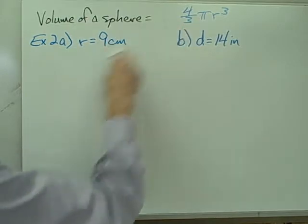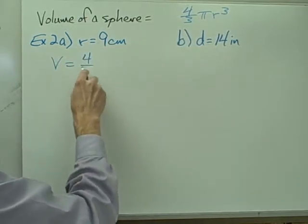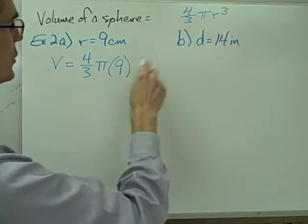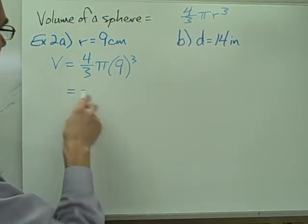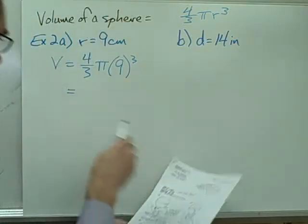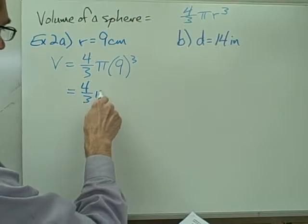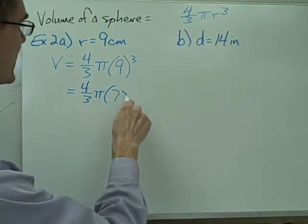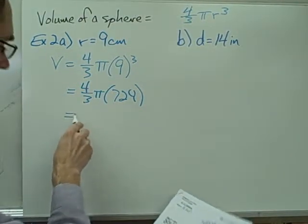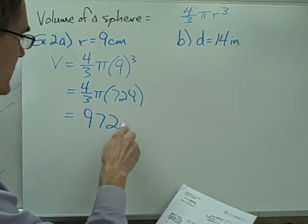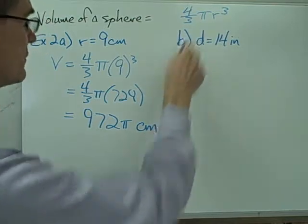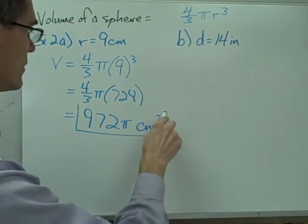This one we have a radius of 9 centimeters. I just plug that into my volume formula: 4 thirds times pi times 9 cubed. I'll need my calculator here. 9 cubed gives me 729, and if I multiply that times 4 and then divide by 3, I get 972 pi, and my units are centimeters cubed.